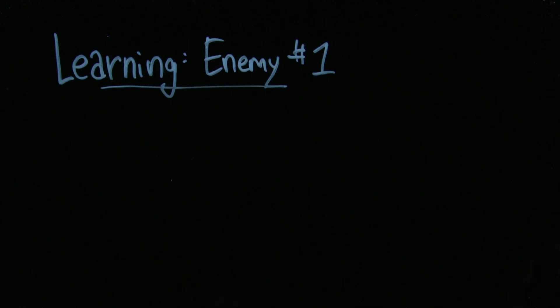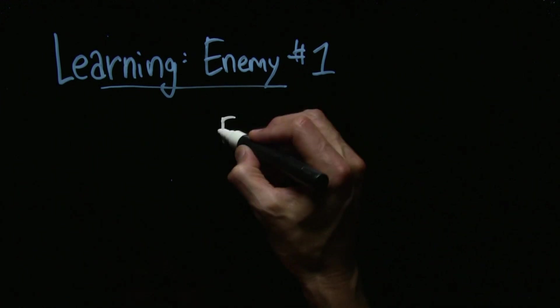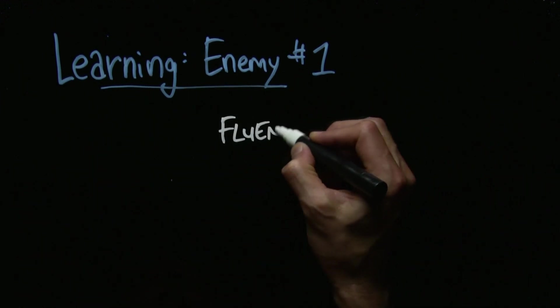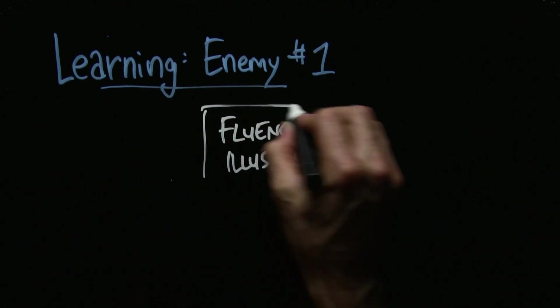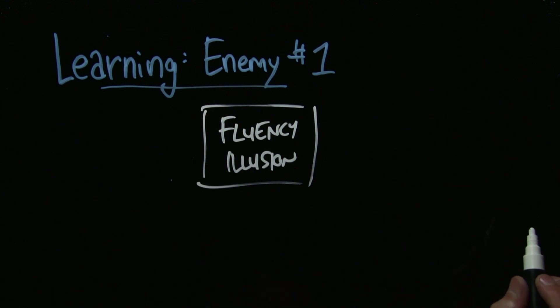Learning enemy number one is called the fluency illusion. The fluency illusion is what cognitive scientists who study learning describe it as. This is the basic idea.